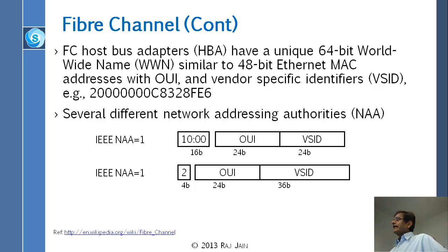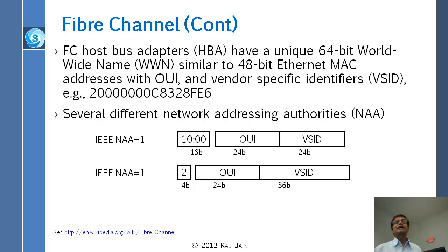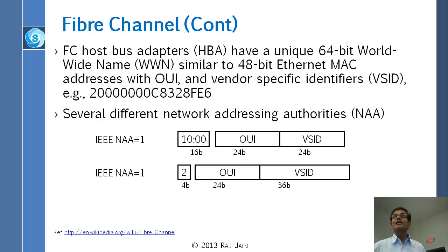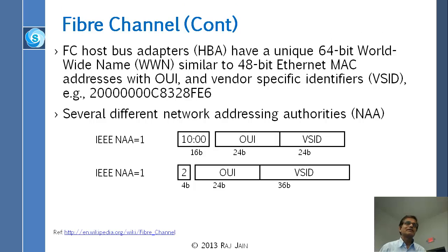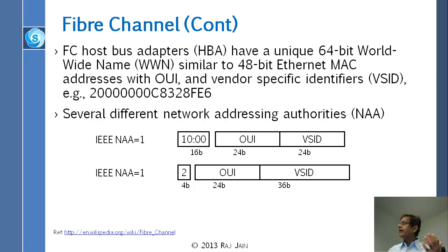The first 16 bits that were added could be different depending upon who gave you that address. In the case of Ethernet, all addresses come from IEEE. If you start a new Ethernet company, you go to IEEE, pay $1,000, and get a block of 2^24 addresses. When you make a device, you number them sequentially. That is called OUI — organizationally unique identifier — and this is what IEEE gives you.